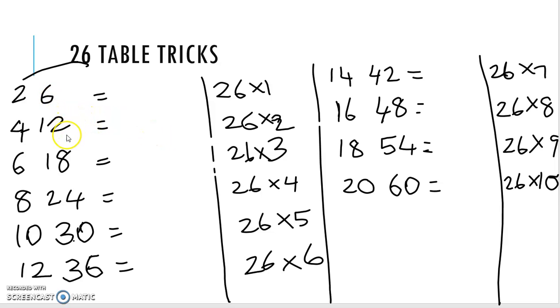Then 6 table. 6×1 is 6, 6×2 is 12, 6×3 is 18, 6×4 is 24, 6×5 is 30, 6×6 is 36, 6×7 is 42, 6×8 is 48, 6×9 is 54, 6×10 is 60.